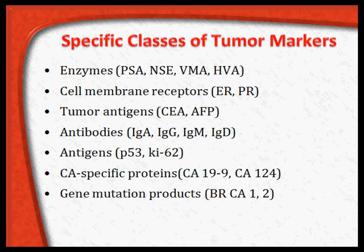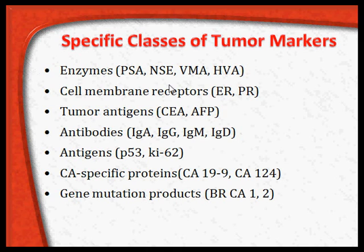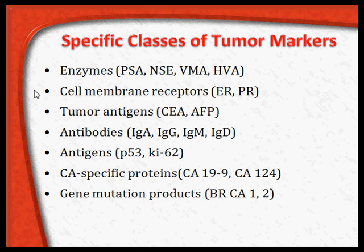There are specific classes of tumor markers. These include enzymes, prostate-specific antigen (PSA), neuron-specific enolase (NSE), vanillylmandelic acid (VMA), and homovanillic acid (HVA). VMA and HVA are catecholamine derivatives seen in adrenal tumors. Cell membrane receptors are particularly useful — estrogen receptors and progestin receptors in breast cancer.